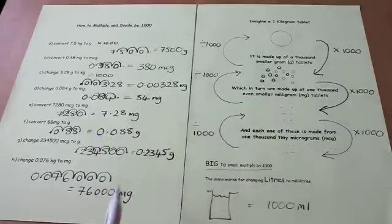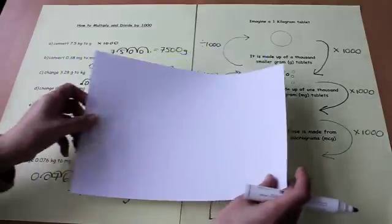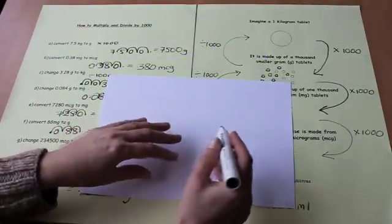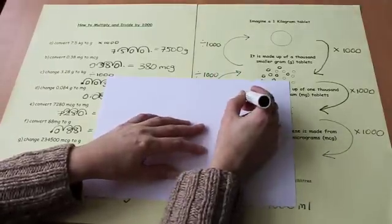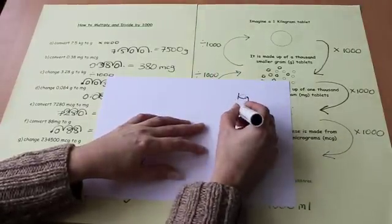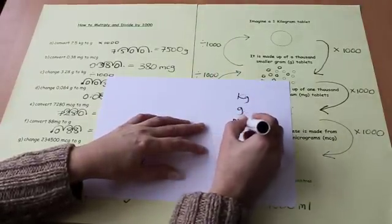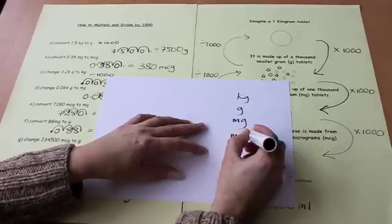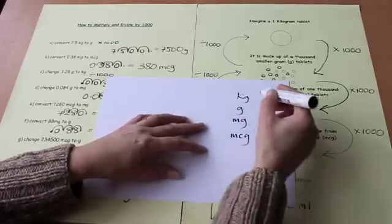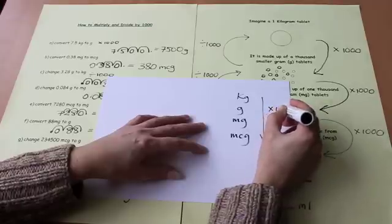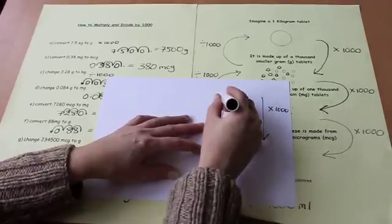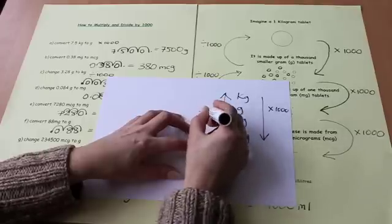To summarize this tutorial then, you need to remember how to get these units in order of size. And it's worth just practicing writing these down whenever you have a spare moment. You need to remember that when you're going from big to small, you're times by 1,000. And when you're going the other way, you're dividing by 1,000.